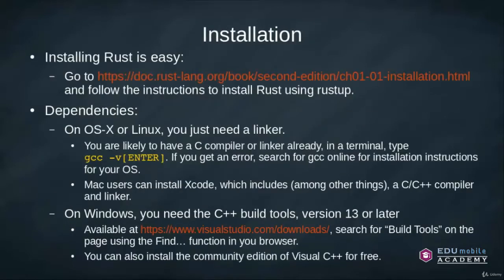Installing Rust is very easy. Go to the provided link and follow the instructions to install Rust using RustUp. If you don't want to do that, you can get the binary and just drop it in your system on Linux or Mac. You can look up all kinds of information at the rust-lang.org site. On OS X or Linux, you need to have a linker available.